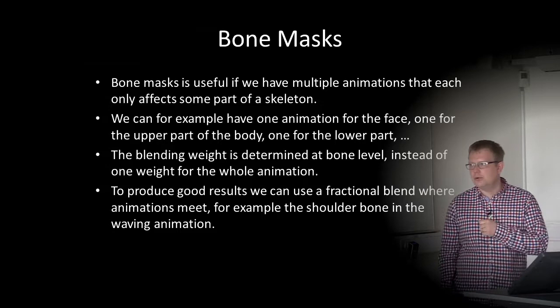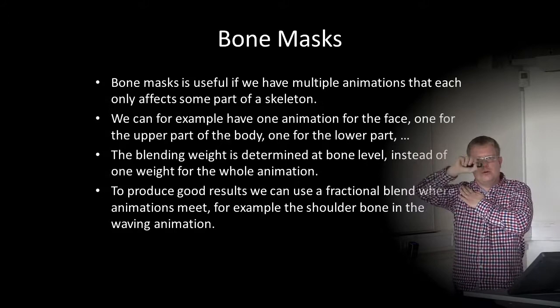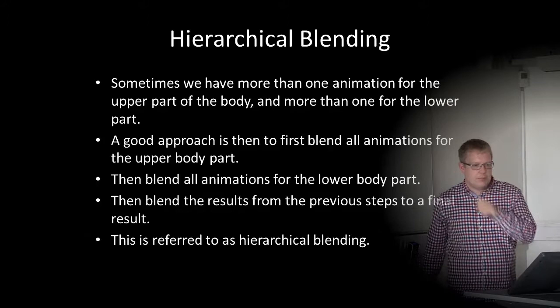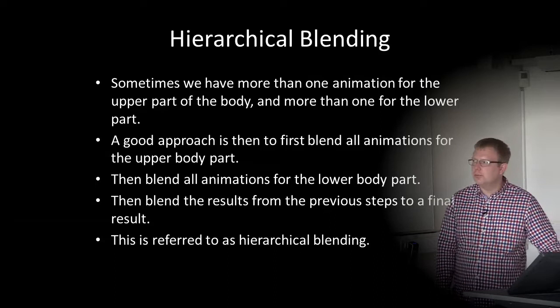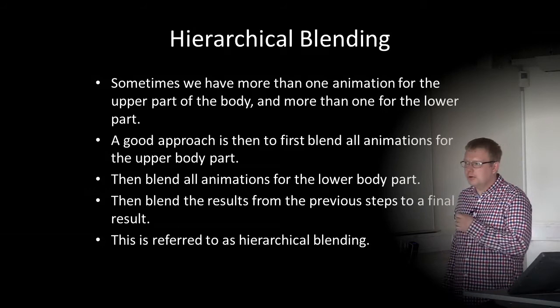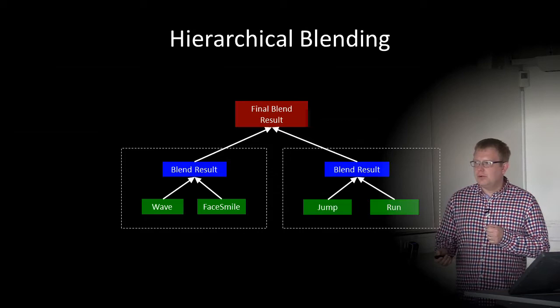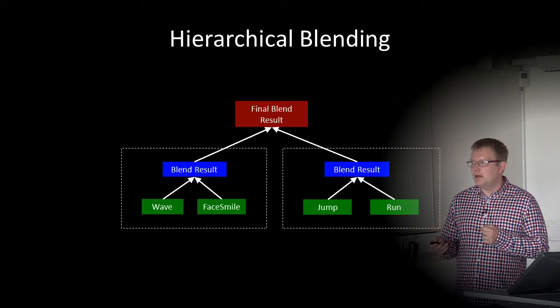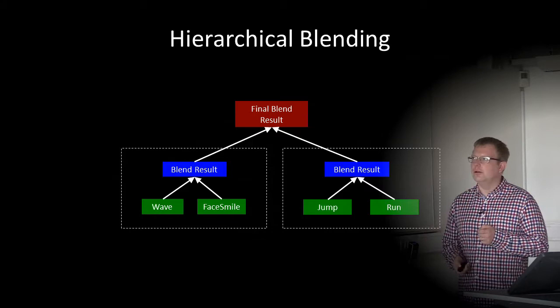Bone masks are useful when multiple animations each affect only part of the skeleton — one animation for the face, one for the upper body when waving, one for the lower body when moving. The blending weight is determined at bone level. To produce good results, we use a fractional blend where animations meet — for example, the shoulder bone in the waving animation affects the shoulder somewhat. A good approach is hierarchical blending: first blend all animations for the upper body, then for the lower body, then blend those results into a final result.